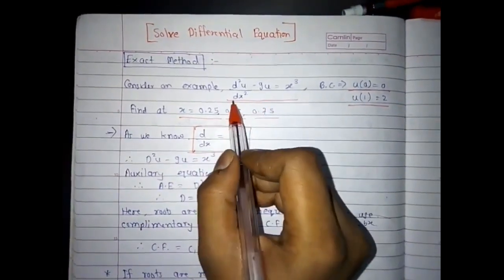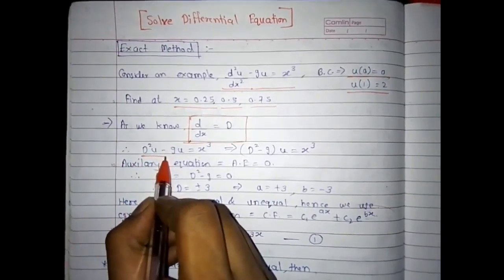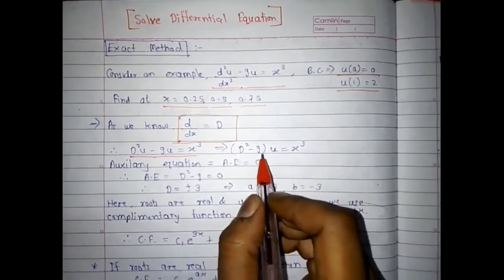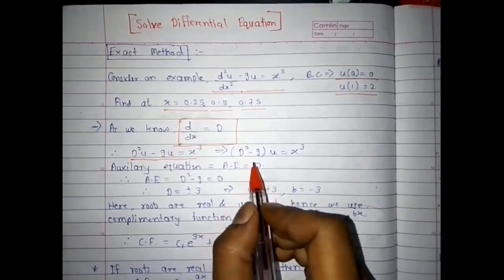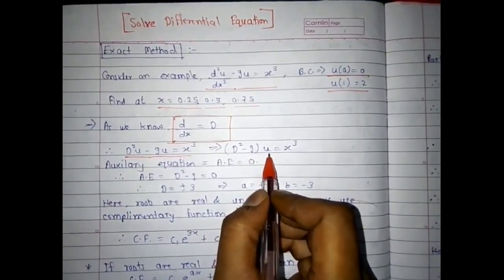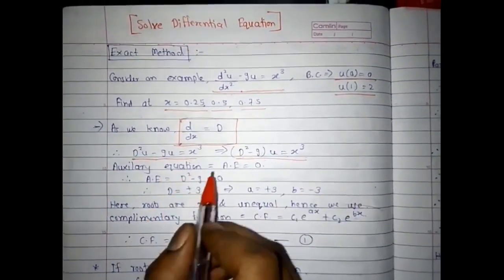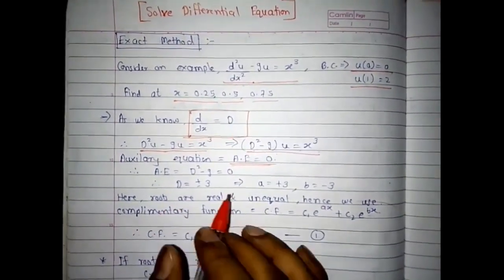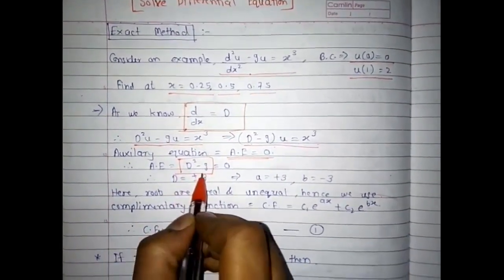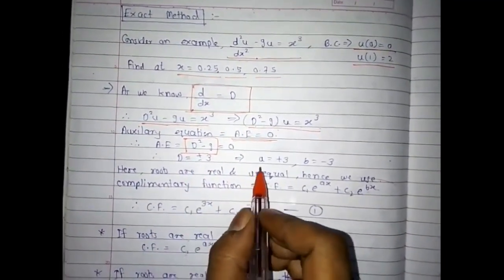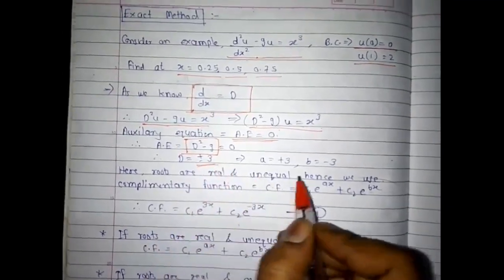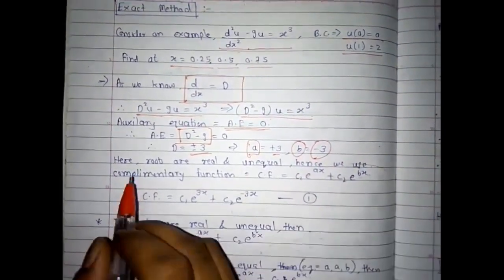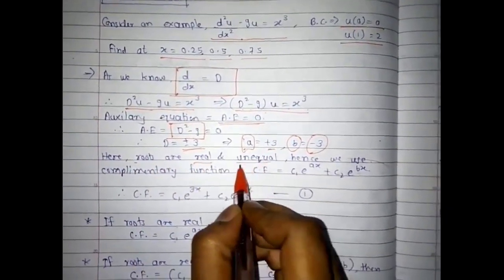As we know, D = d/dx, so we convert this differential equation as D²u minus 9u equals x³. Taking u as common: (D² - 9)u = x³. The auxiliary equation is always set equal to 0, so here the auxiliary equation is D² - 9 = 0, giving roots plus 3 and minus 3, where a = +3 and b = -3. The roots are real and unequal.